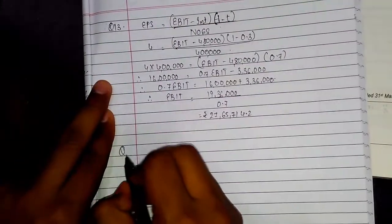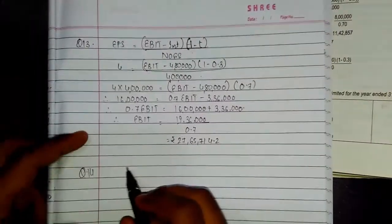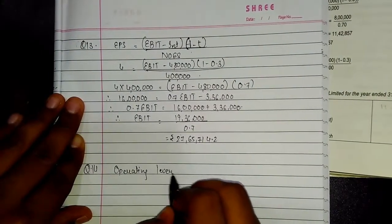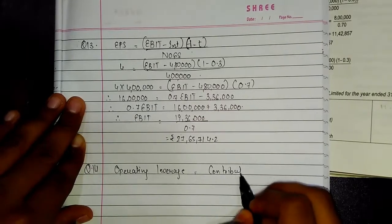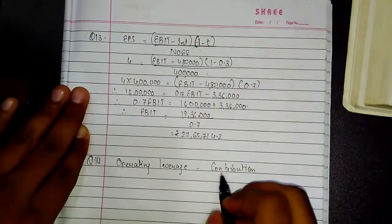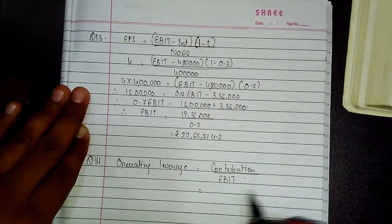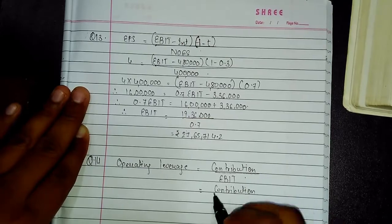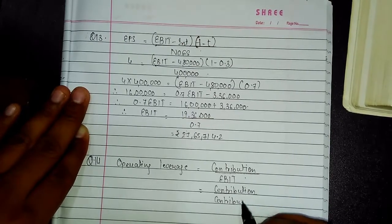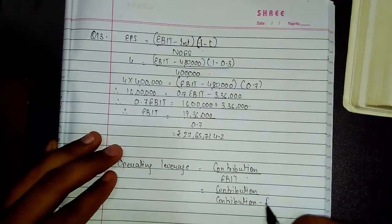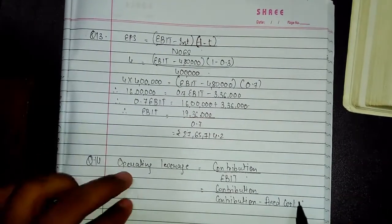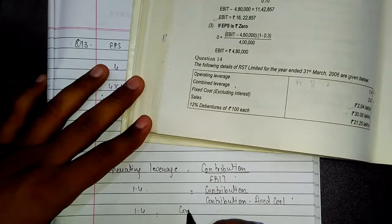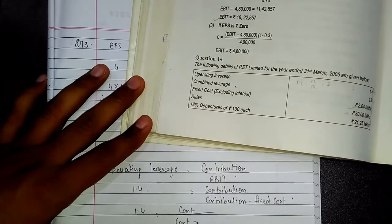Question number 14: how we will find out contribution is operating leverage is equal to contribution divided by EBIT. We can also write it like contribution divided by contribution minus fixed cost. Since we don't have EBIT in the question, we have the fixed cost. They have provided us with the fixed cost and operating leverage. Operating leverage is 1.4 and fixed cost excluding interest is 2,40,000.